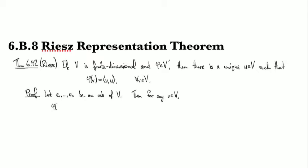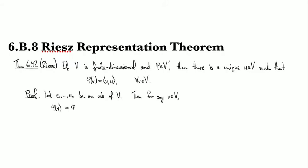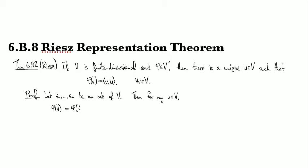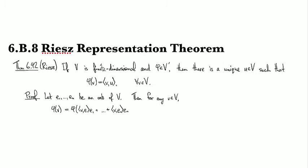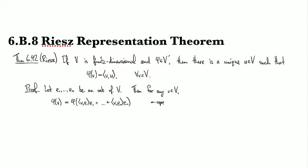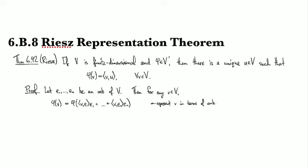Then for any element v, if we have Φ of v, so this Φ is our given element of the dual, then this looks like, well, Φ of, and now I can represent v in terms of that orthonormal basis. And so we've seen the way to do that: it's v against e1 times e1 plus et cetera, v against en times en. So here I'm just giving the orthonormal decomposition of v with respect to our ONB.